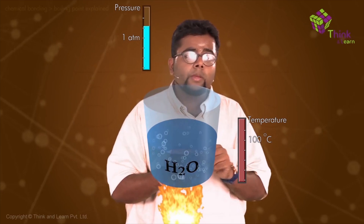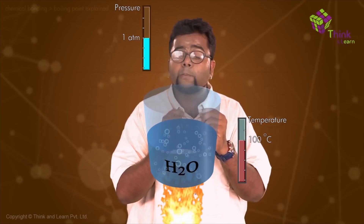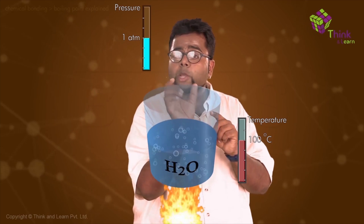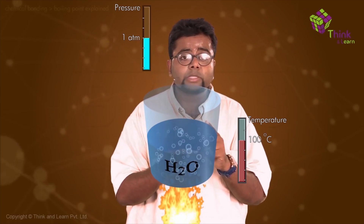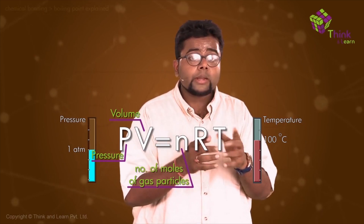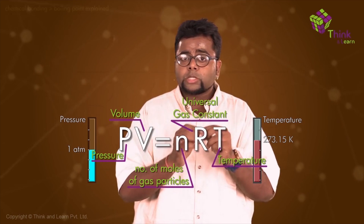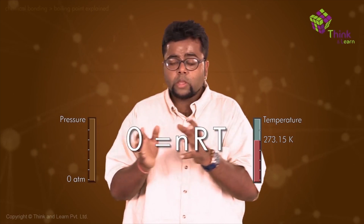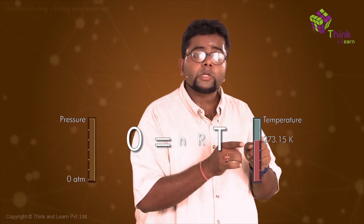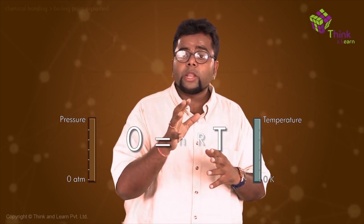Now, one more thing — I was asking people: what is the lowest temperature at which water can boil? I'll take one example — the ideal gas equation, which is PV = nRT, where P is pressure, V is volume, N is the number of moles of gas, R is the universal gas constant, and T is temperature in Kelvin. Now suppose if pressure is 0, then this side becomes 0, and whatever be the values of N or R, the temperature would come out to be 0 Kelvin. So the lowest boiling point you can have is 0 Kelvin.